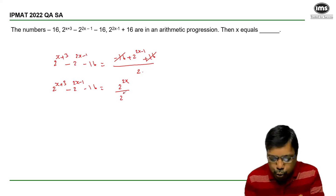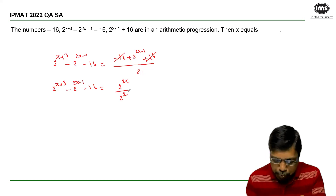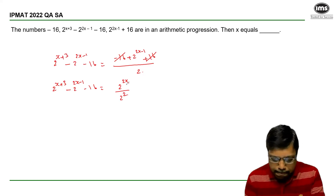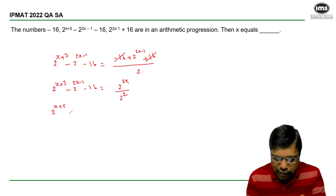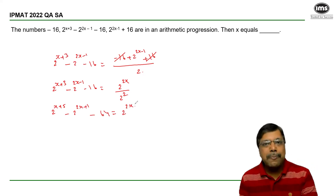I already have a 2 here, so it becomes 2 squared. Now, multiplying with 2 squared, I will get: 2^(x+5) minus 2^(2x+1) minus 64 equals 2^(2x).